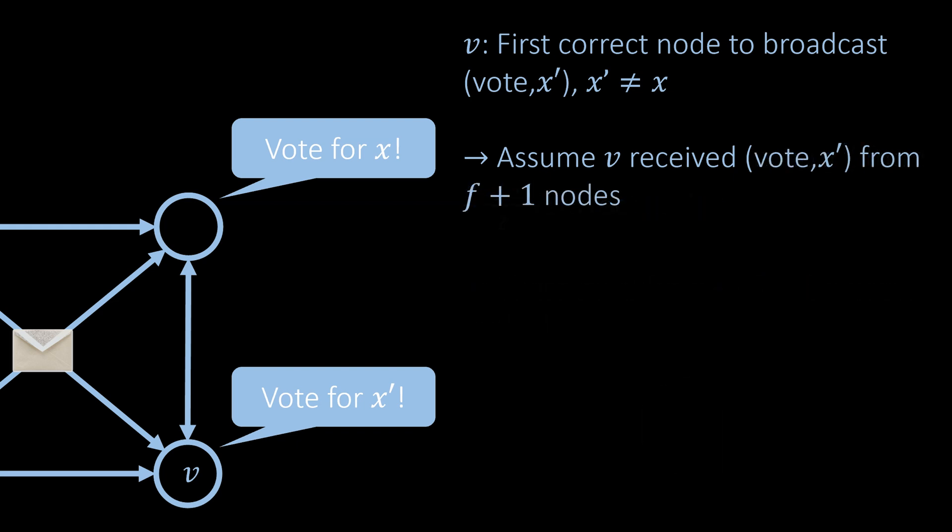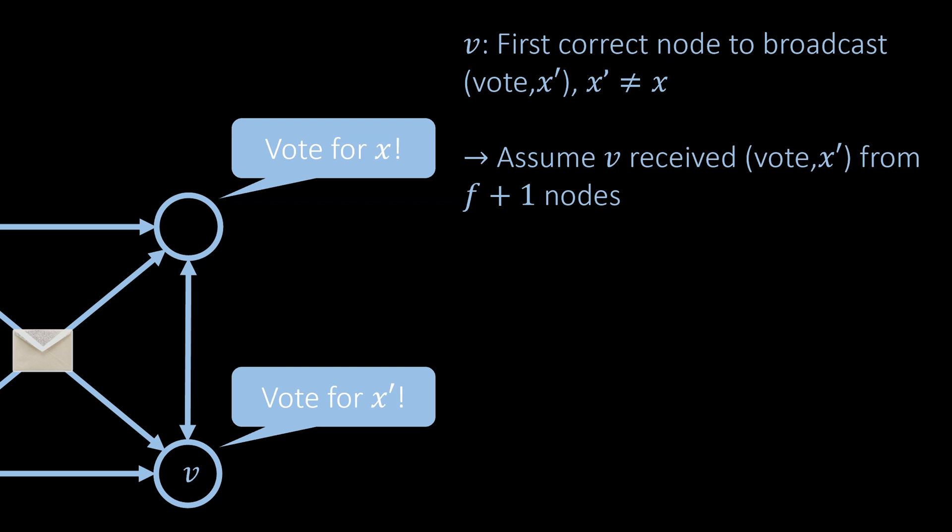So, we must assume that v broadcast its vote message because it received f + 1 vote messages for this value. However, since there are at most f faulty nodes, it must have received at least one such vote message from a correct node, which is a contradiction to the assumption that v is the first node that sends such a vote message. We can conclude that it is not possible that correct nodes send vote messages for different values.